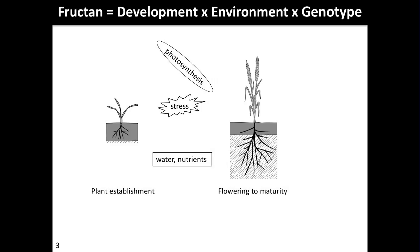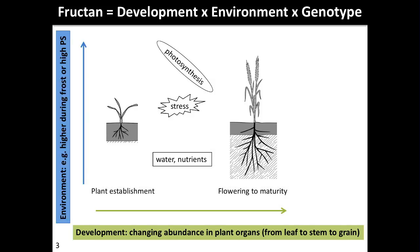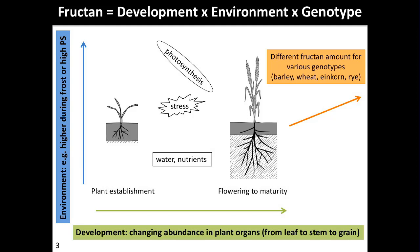In cereals, fructan accumulation changes during the course of development. In a young seedling, we find fructans accumulating in the root and in the leaves. Later on, they peak in abundance in the stem, and finally have very high accumulation in the developing grain. The fructan amount also changes under certain environmental conditions — for example, fructans highly increase under frost, but also during high light conditions or drought. Fructan accumulation has also been shown to vary between different genotypes in barley, wheat, einkorn, and rye.